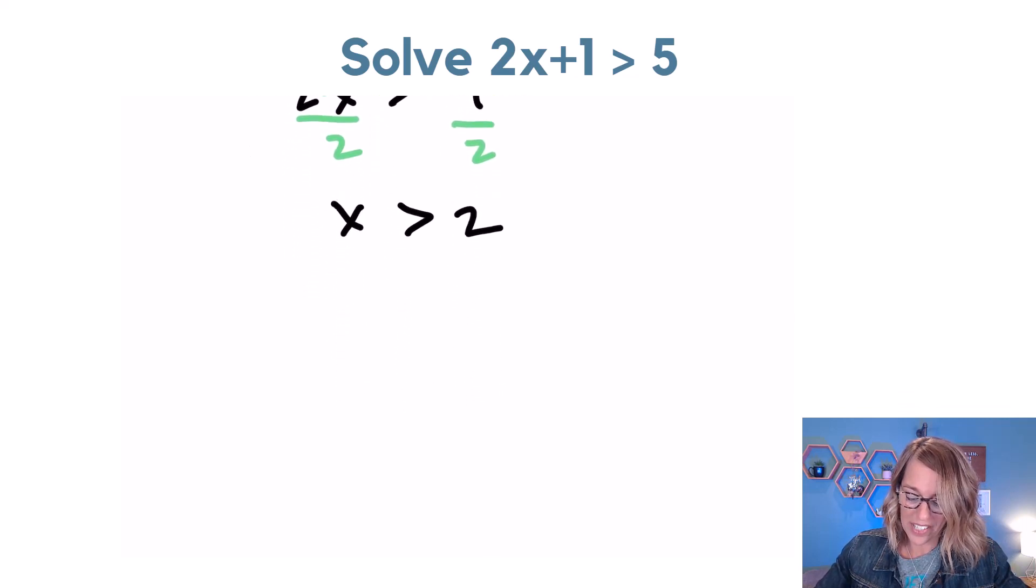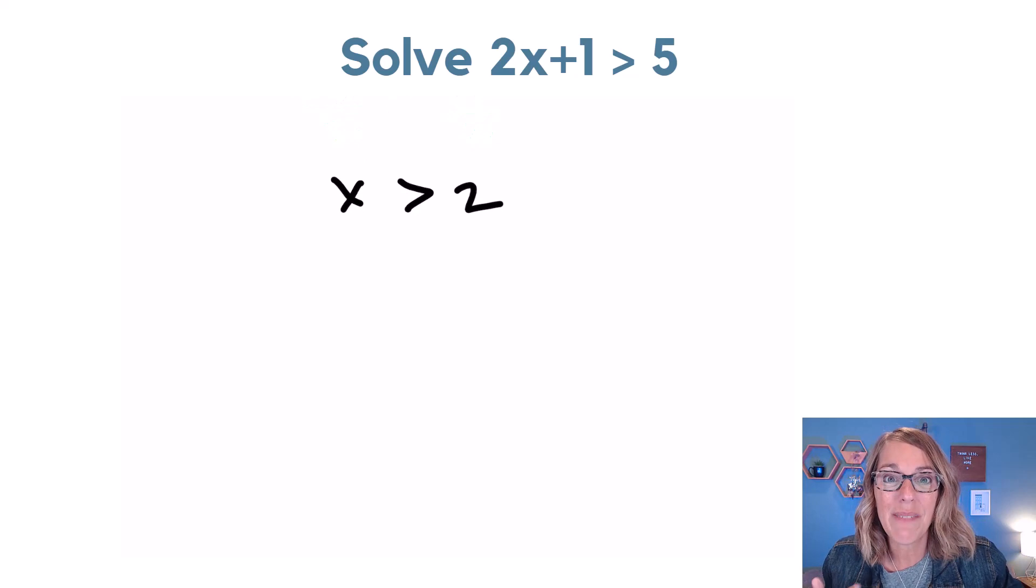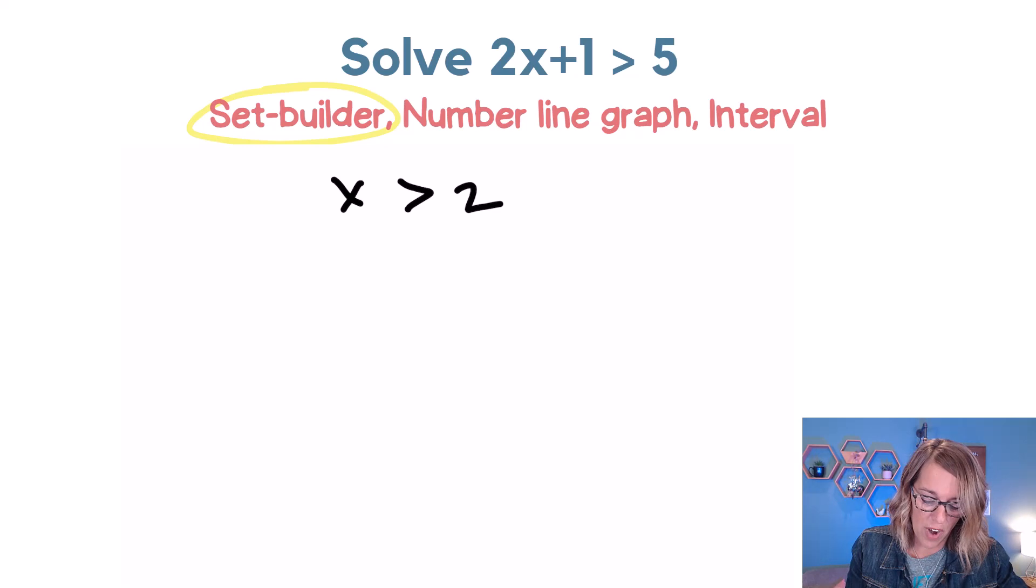Now this is my inequality, but it means that anything bigger than 2, infinitely many solutions are going to work in this inequality. I want to go ahead and start by expressing this in set builder notation. Infinitely many works really well as a set. This is my favorite way because it's super easy.